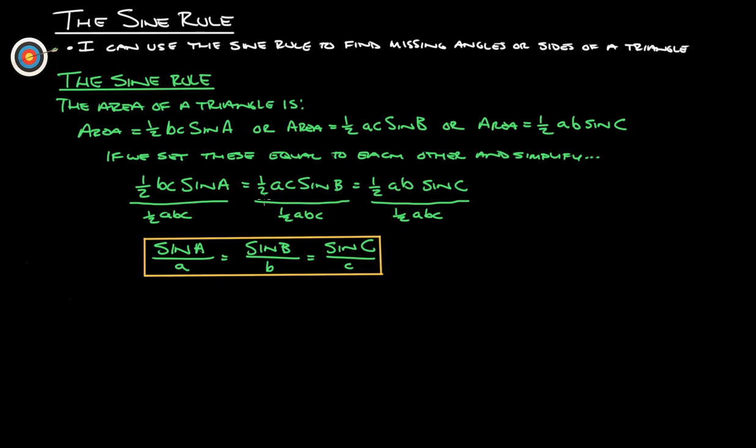If we divide all of those by 1 half to get rid of the 1 halves, and then all of them have two sides on there. So, if we do A, B, and C, we end up, like on this one here, we have the 1 halves cancel out, the B's cancel out, the C's cancel out, and you're left with sine A over A.